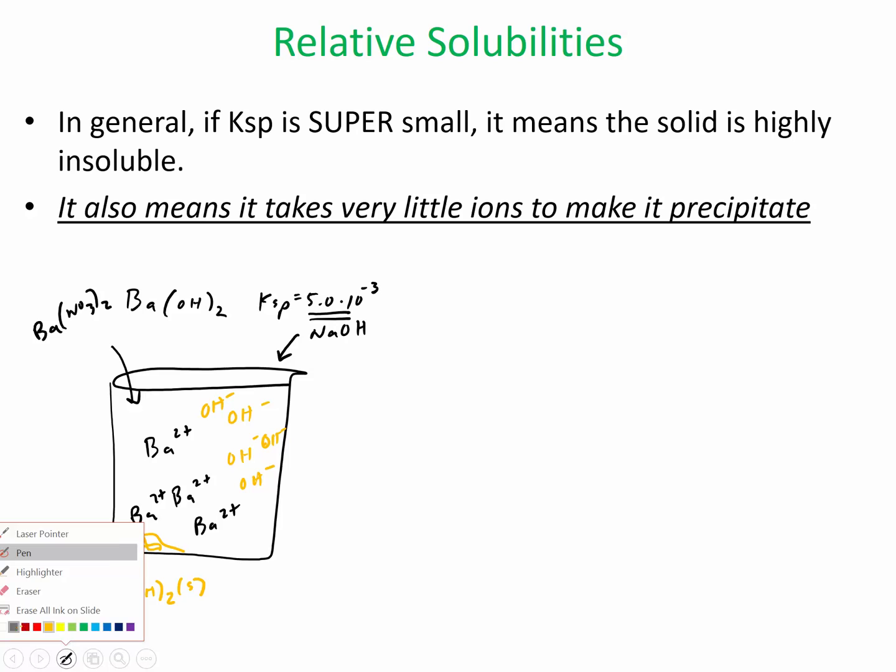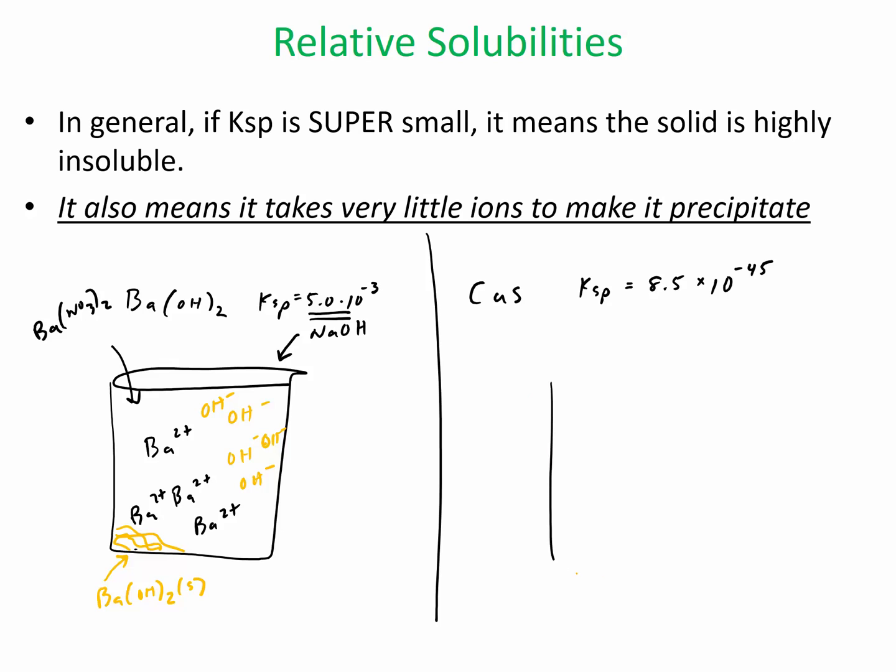Now compare that to something with a really tiny Ksp like copper sulfide. The Ksp for this is 8.5 times 10 to the negative 45th power. So what that means is if you have a sample of copper in here, so let's say some copper nitrate. All nitrates are soluble. So that's our source of copper ions. We have a whole bunch of copper ions.